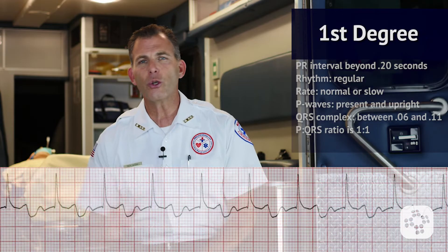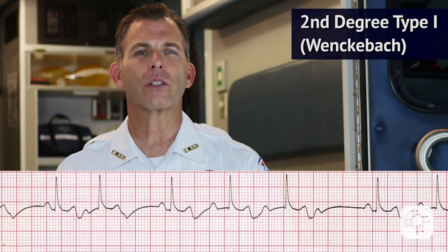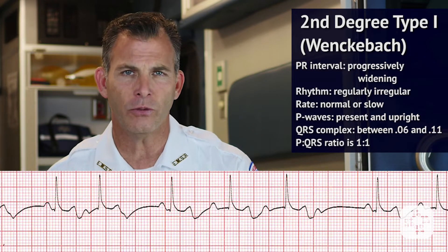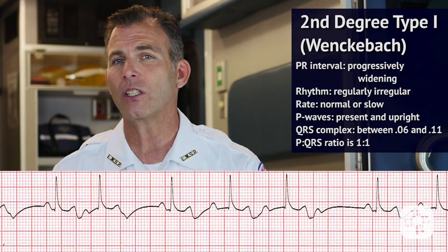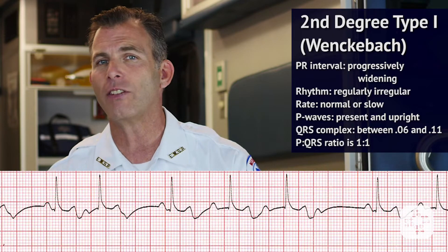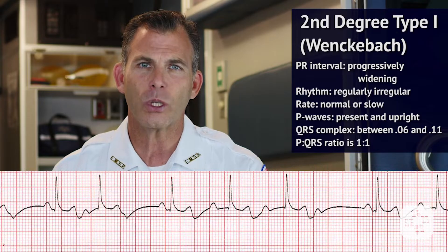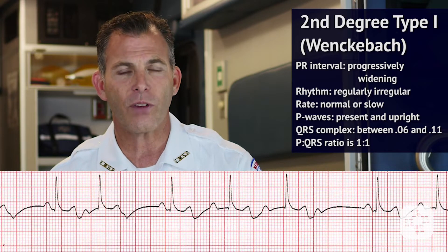There is usually minimal clinical significance with this form of heart block. A second degree, otherwise called Mobitz Type 1 block, is characteristic of having a progressively widening P to R interval, which is then followed by a QRS complex that is progressively delayed at the AV node until it is completely absent altogether, showing only a P wave with no QRS following it.